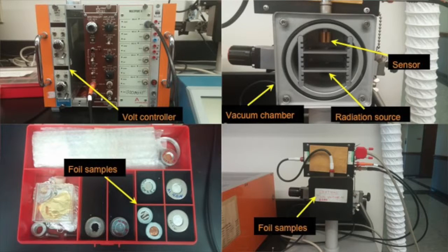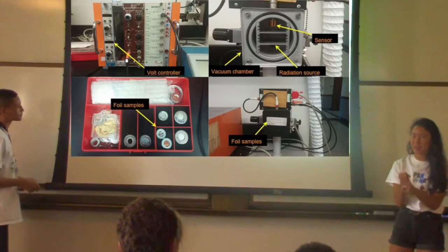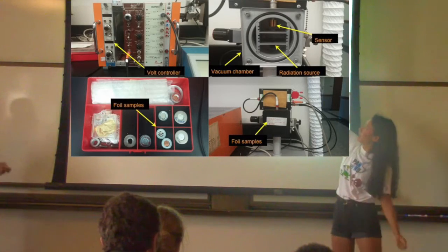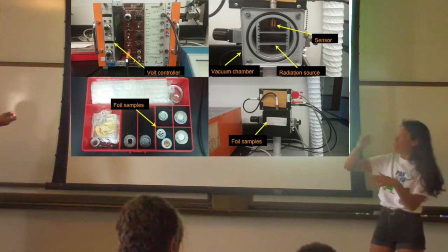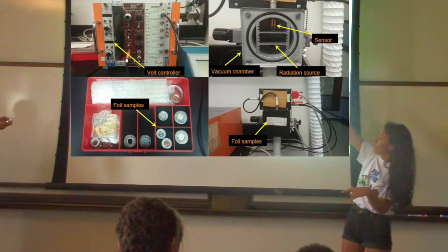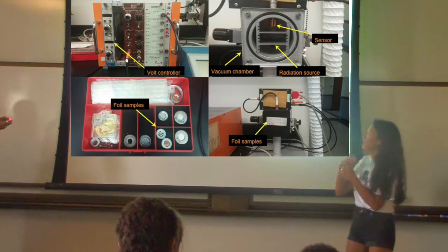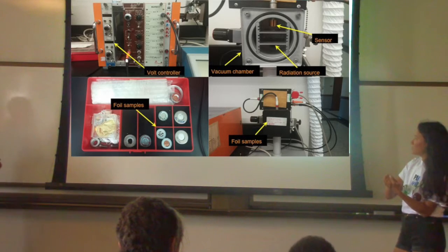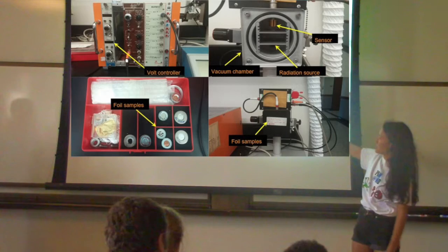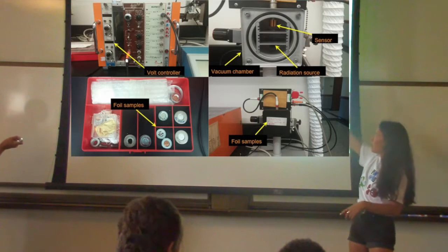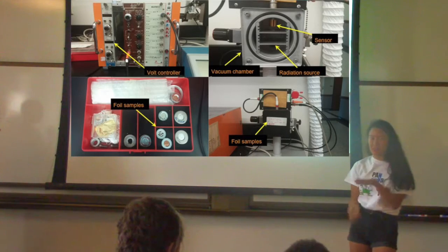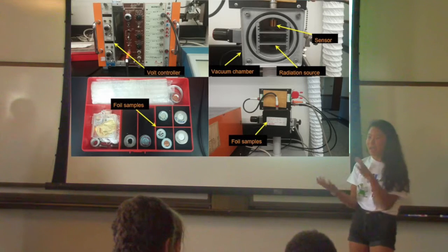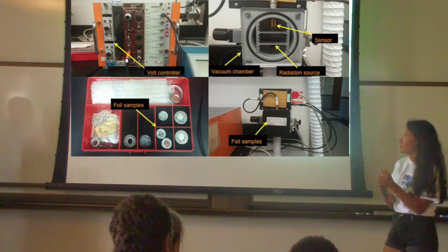This is some of the equipment that we used. What happened is we took this radioactive source and put it in there, and this source was emitting alpha particles. Above that, we put the sheets of foil of different thicknesses, and we used a pump to pump all the air out of that little chamber, because alpha particles are stopped really easily. So if there's air in the chamber, that would interfere with their motion.